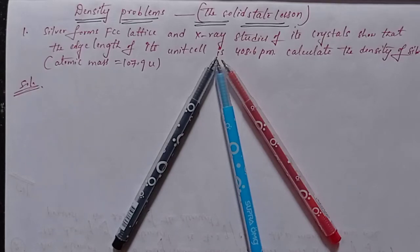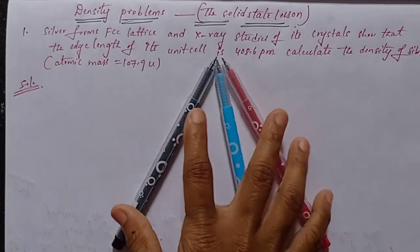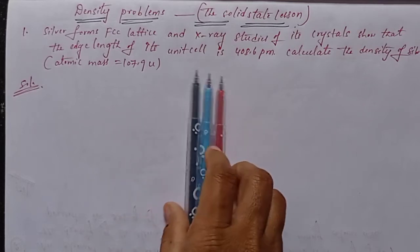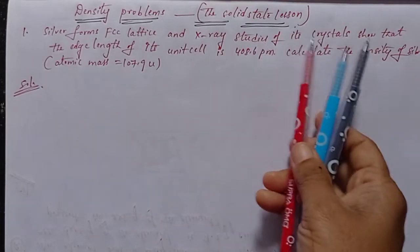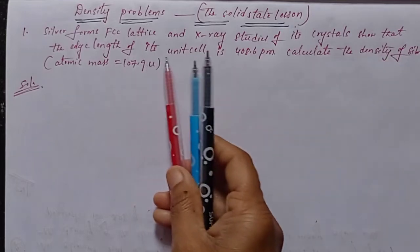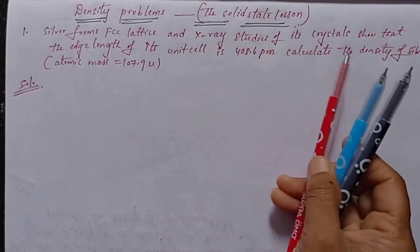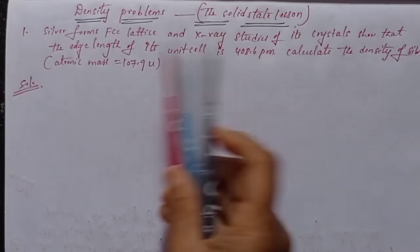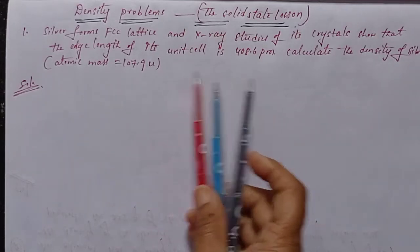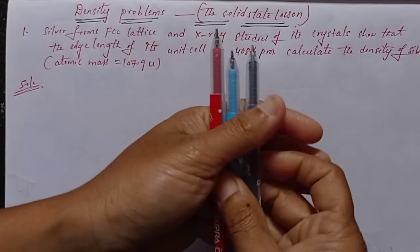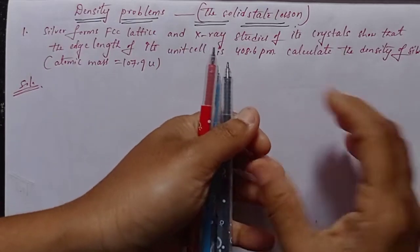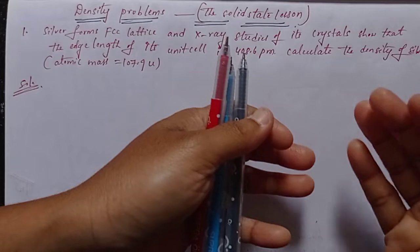Good morning students, I am your teacher. Today I am going to discuss a density problem from the solid state lesson. This is an NCERT problem: silver forms an FCC lattice and X-ray studies of its crystal show that the edge length of its unit cell is 408.6 picometers. Calculate the density of silver. Atomic mass is also given: 107.9.